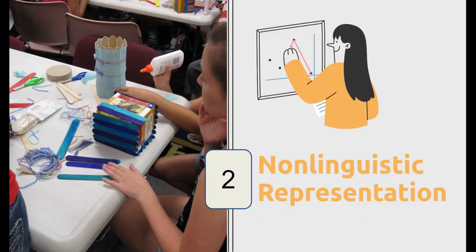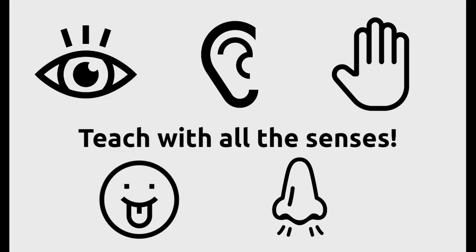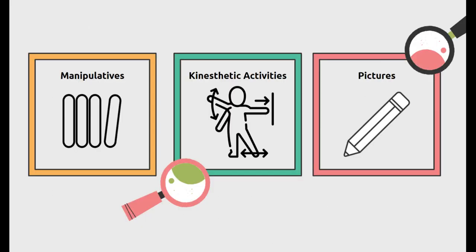Now, what about the next strategy? Non-linguistic representations is what it is. To make a long story short, non-linguistic representations just encourages the use of all senses when teaching and learning. See, hear, touch, smell, and taste. Now, we're not saying that you need to bring in food for your students or waft perfume throughout the classroom. No, non-linguistic representations have you consider each sense when you're teaching and how students might utilize these senses and variable senses when they are learning.